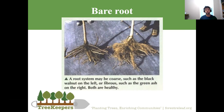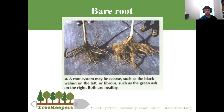Bare root trees make it clear what kind of root system a tree has. Many popular nursery trees have a very fibrous root system — green ash and red maple are examples. A fibrous root system is part of why red maples are so popular and easy to grow — nurseries love them because they're easy to profit from. Black walnut, by contrast, has a very coarse root system. If you disturb a fibrous root system, those smaller roots recover more easily and are more pliable; with a coarse root system, you can easily break several major roots.